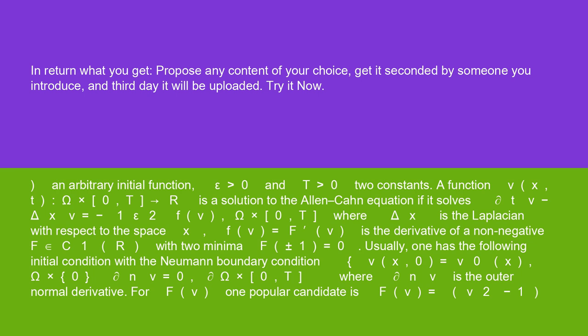is a solution to the Allen-Cahn equation if it solves ∂ₜv - Δₓv = -(1/ε²)f'(v) on Ω × (0,T),